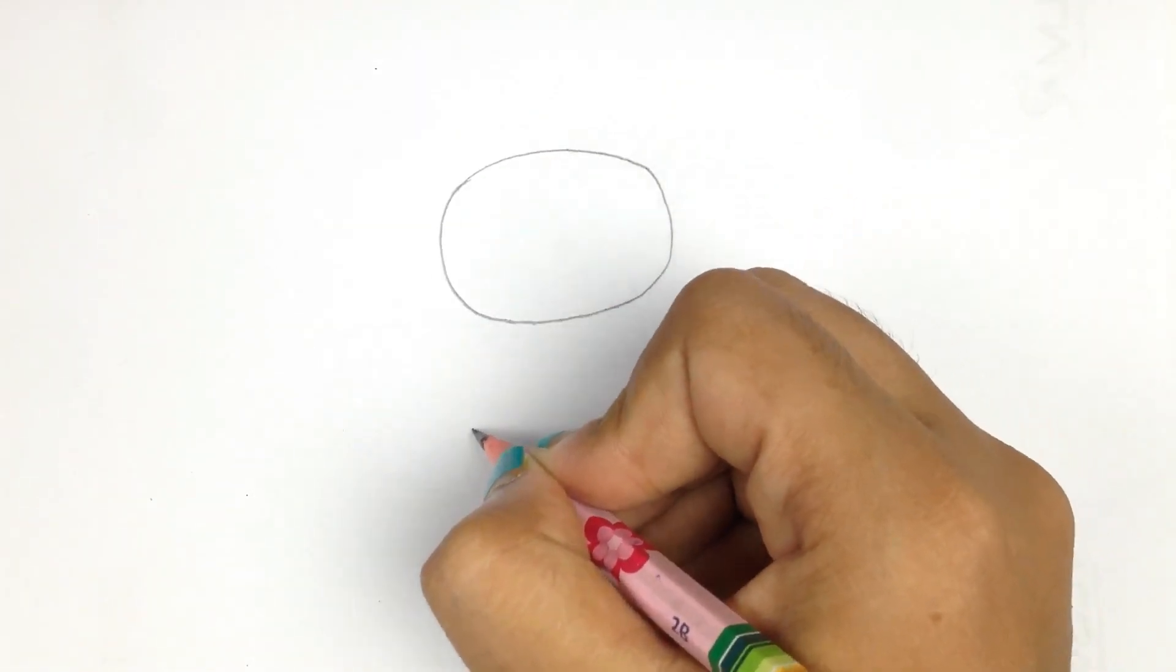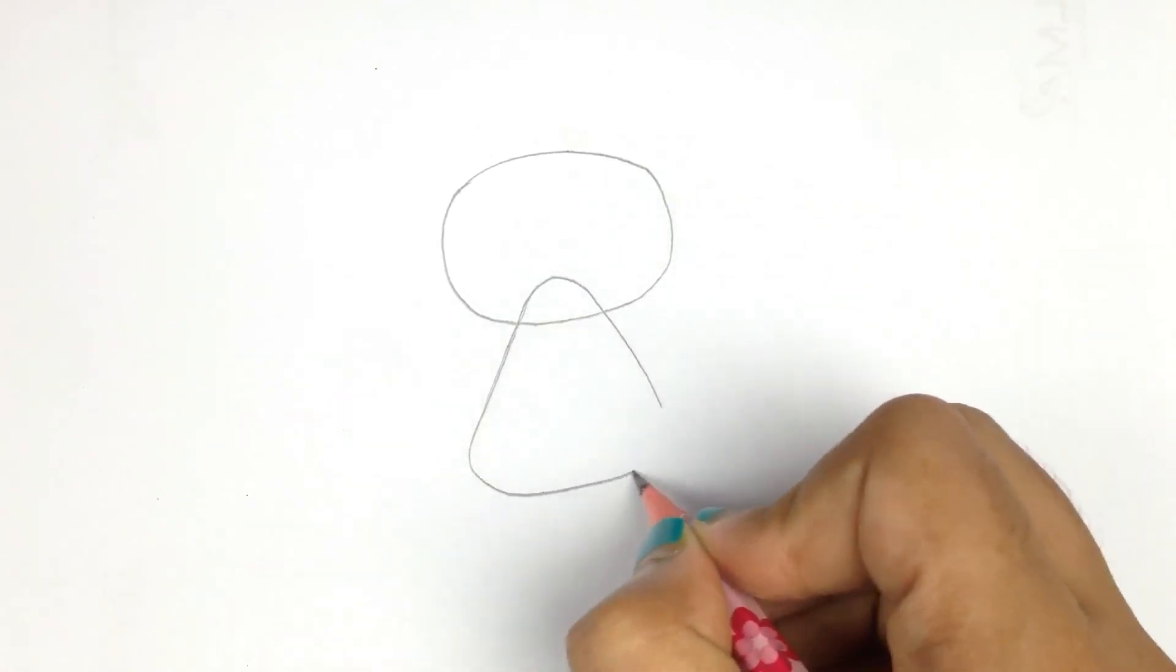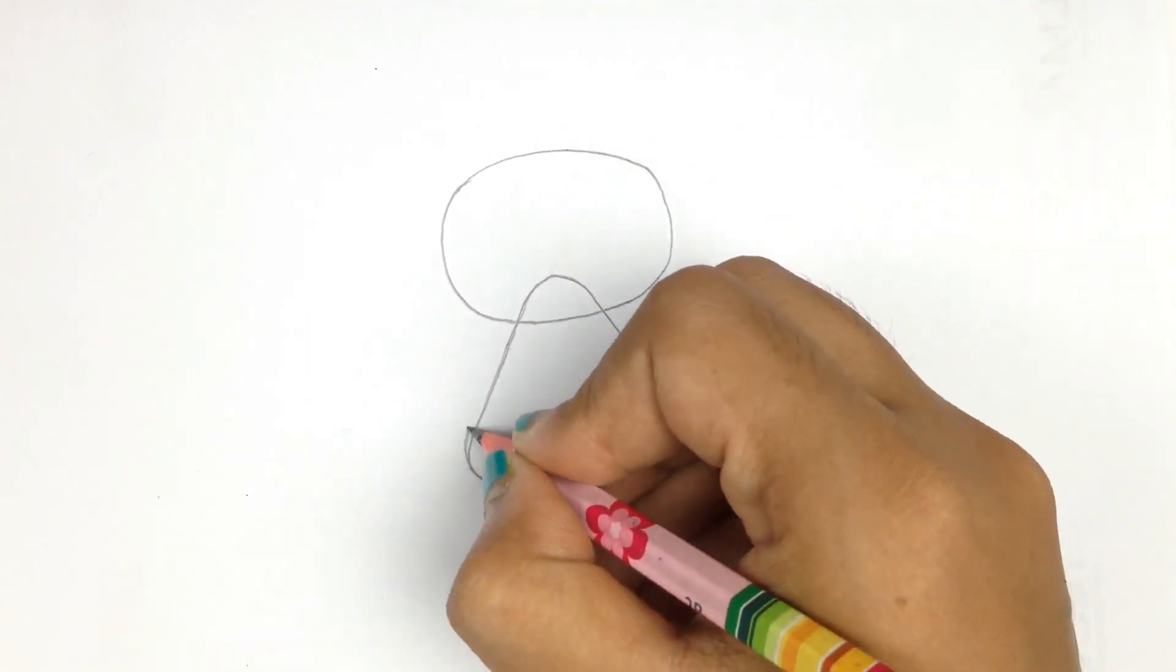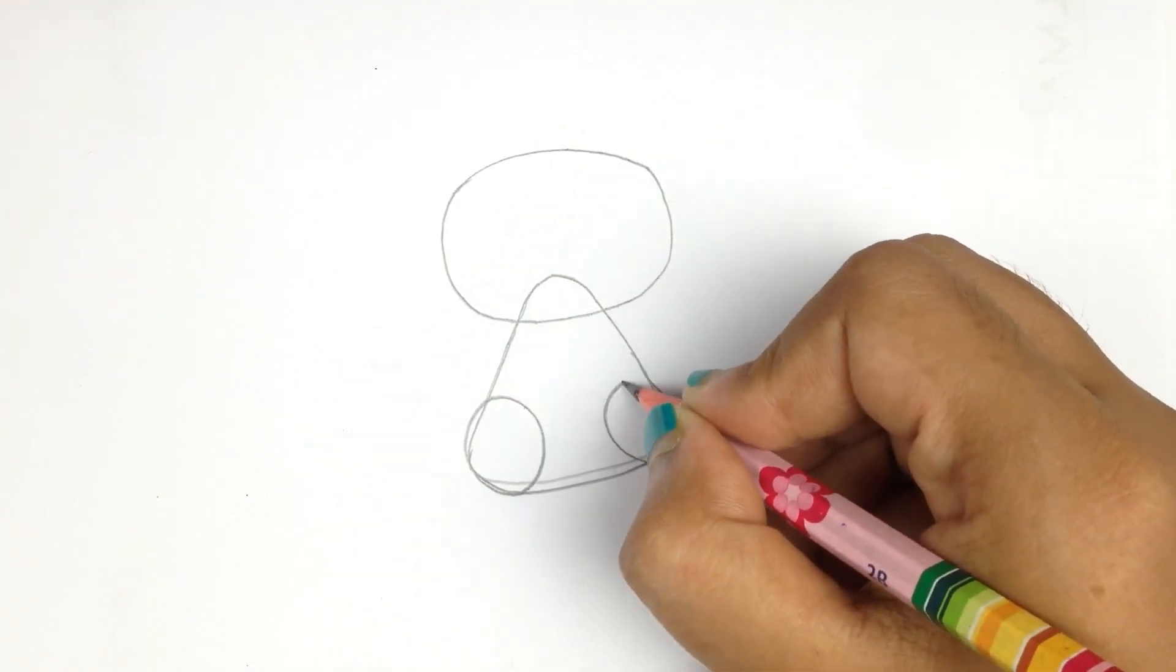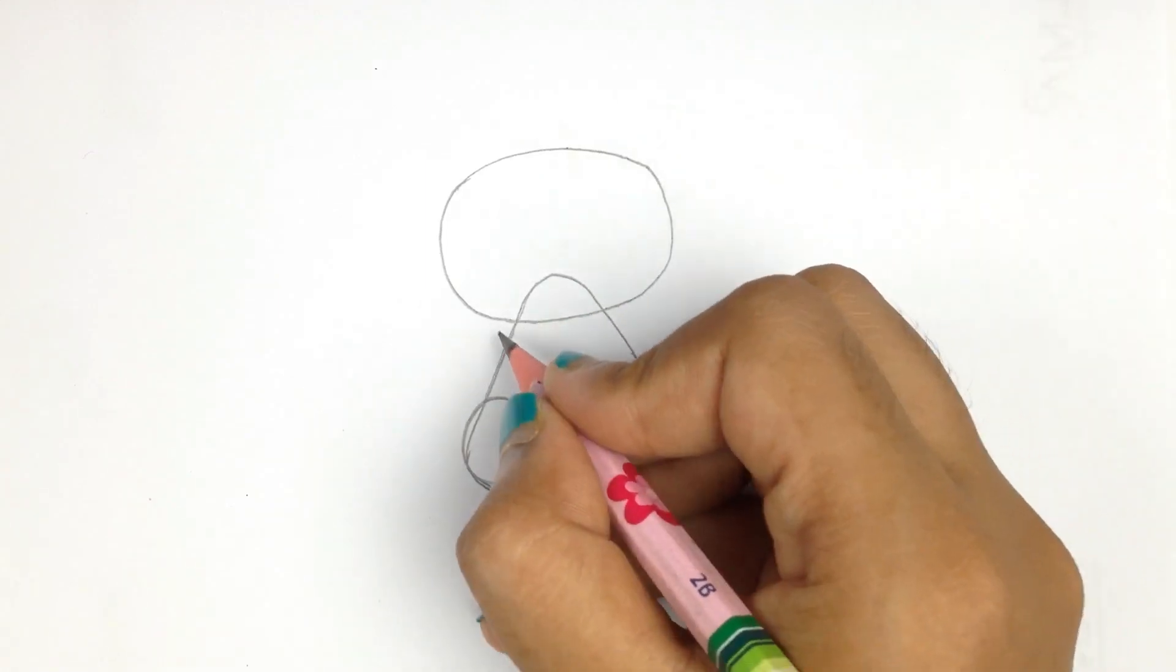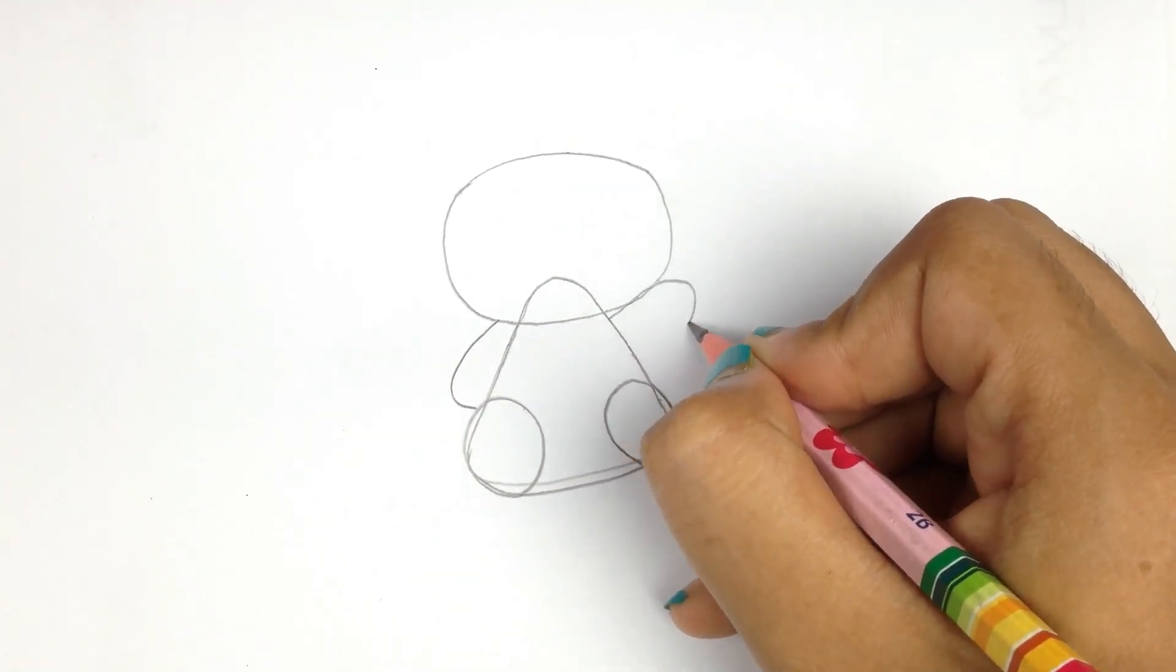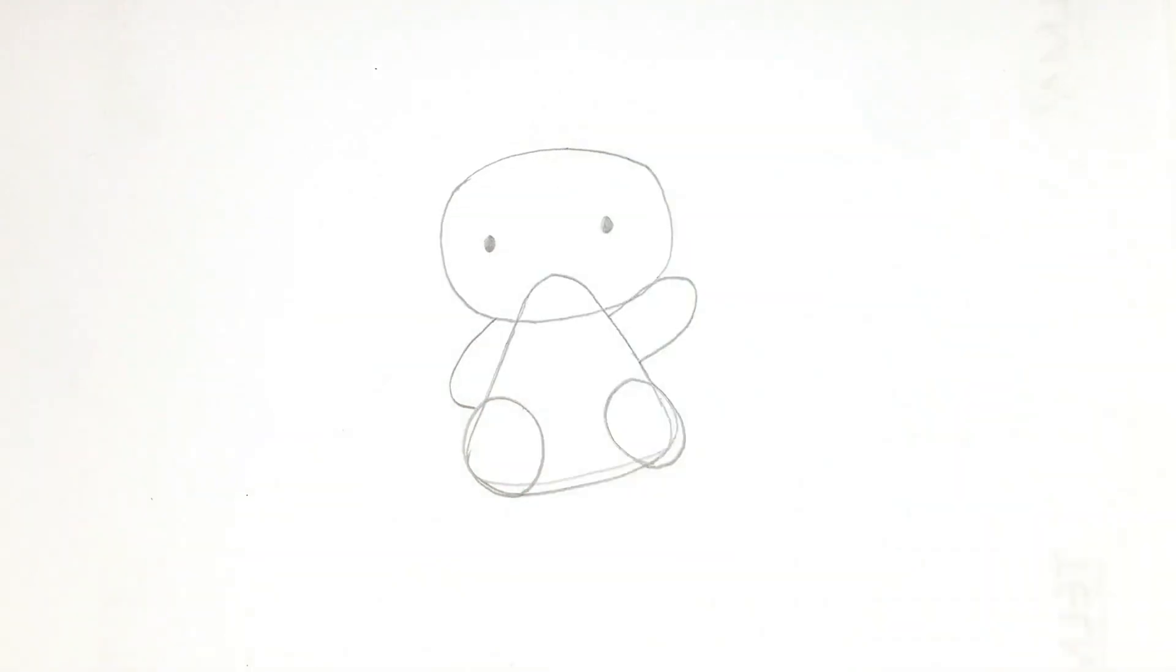To draw Hello Kitty, you have to draw an oval. Now you have to draw a triangle, but without any sharp corners. Make two more ovals, and it will be the paws. Let's add two cute little hands and tiny eyes.